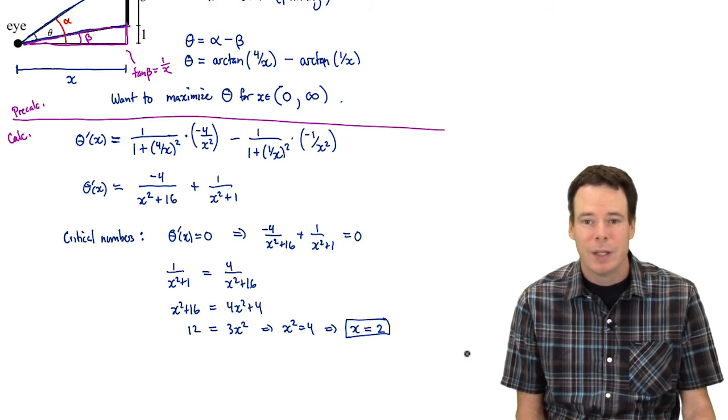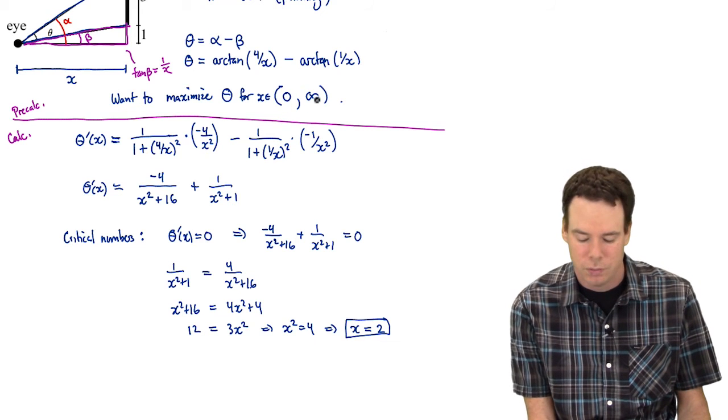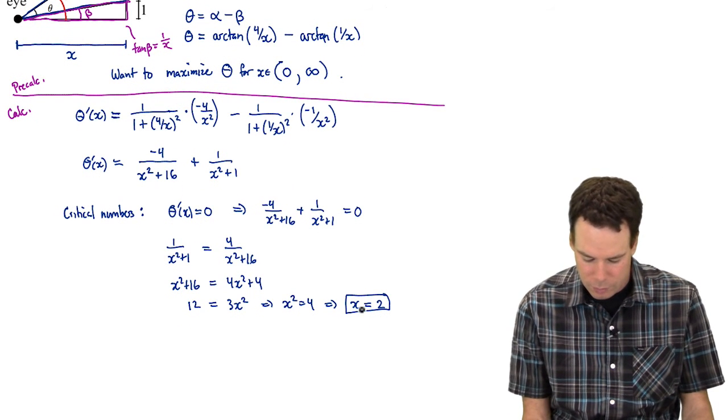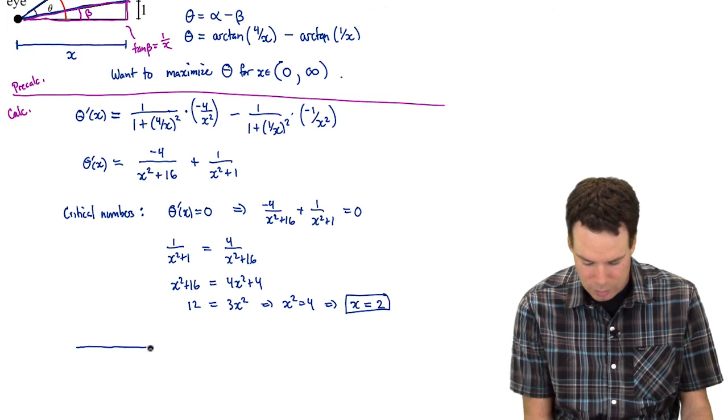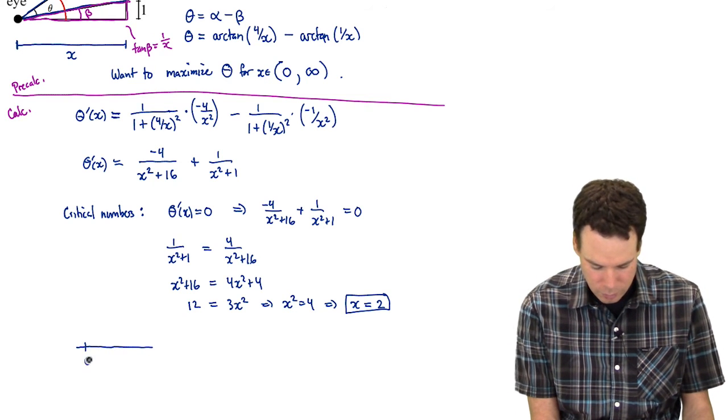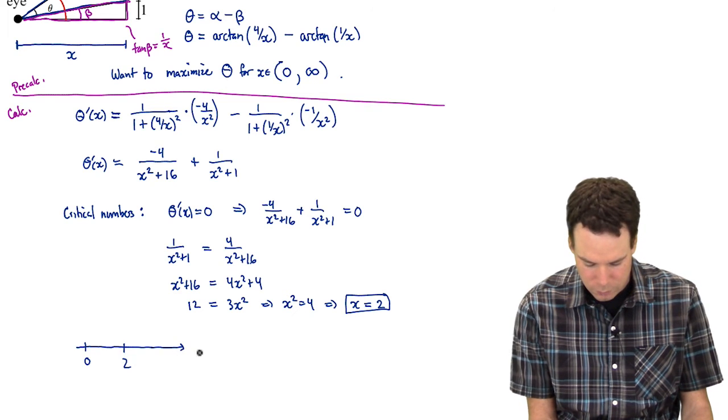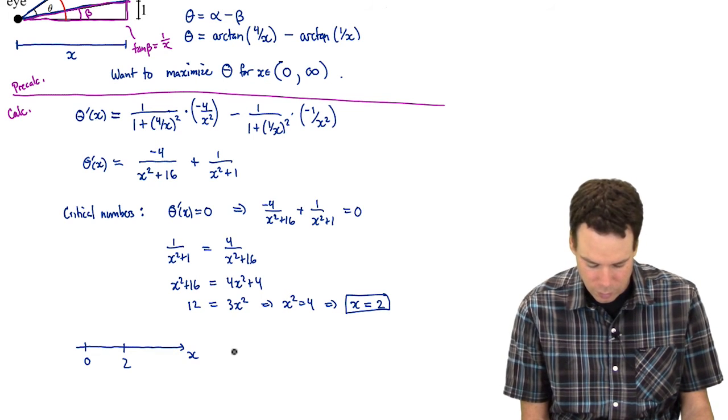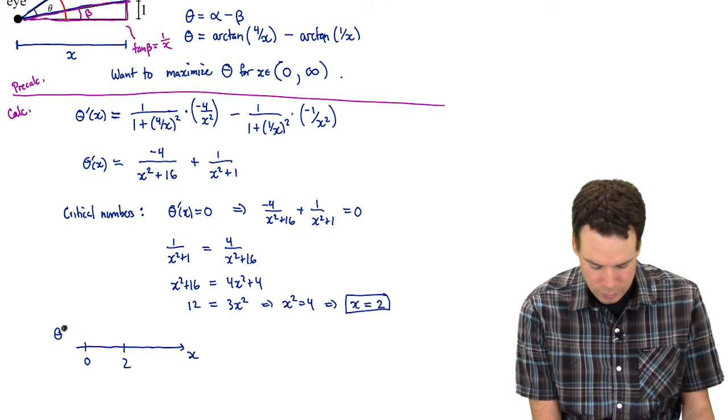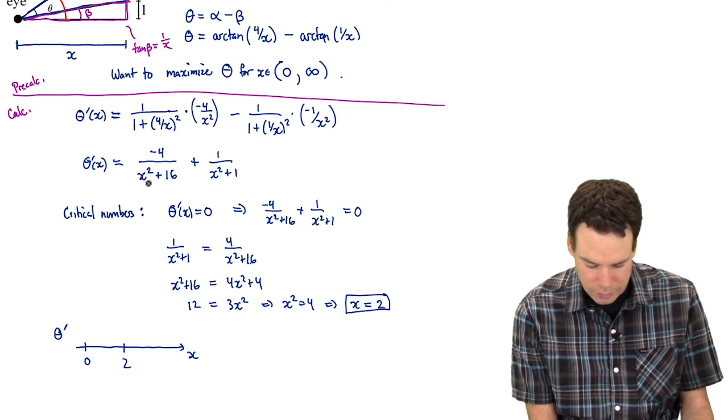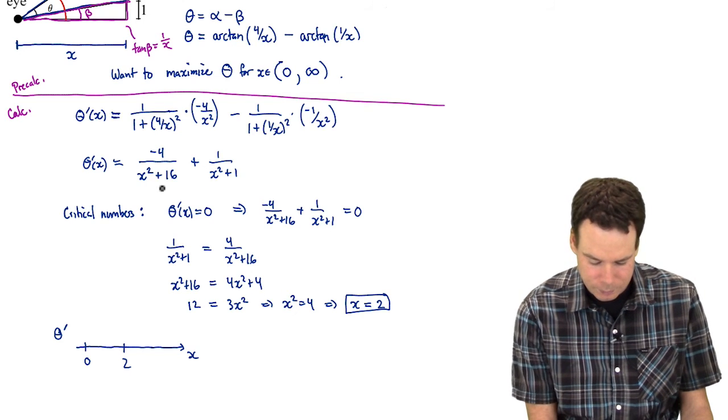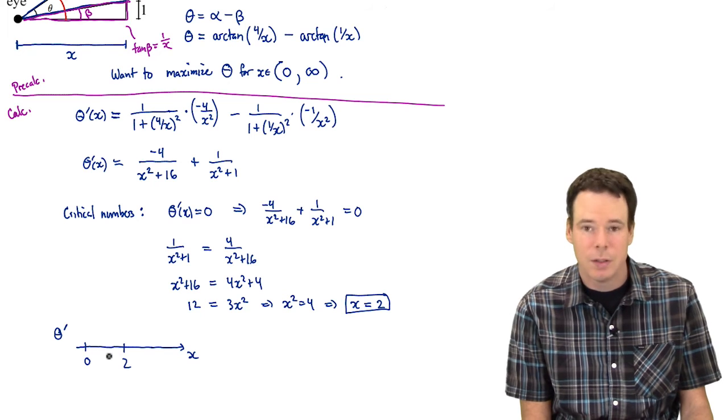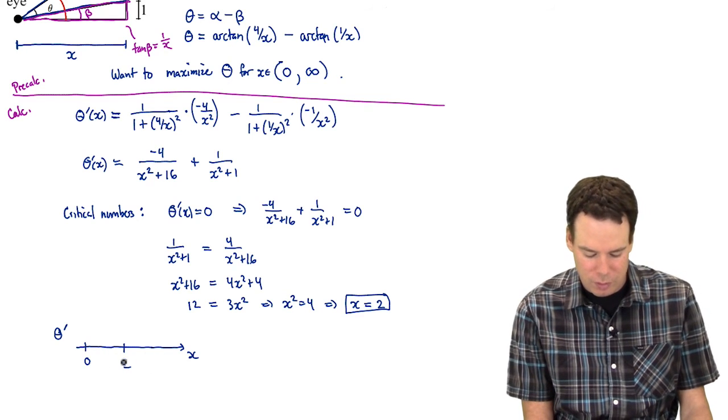So there's our critical number. Now we want to find the maximum. We can't use the closed interval method here because we're not dealing with a function defined on a closed interval. It's defined at neither end point. So what can we do instead? Well, what we can do is we can look at the sign chart and see if that helps us any. So here's 0, here's 2 and then we're heading off to infinity. So there's our axes that we're interested in looking at the function on. What's our sign of our derivative?